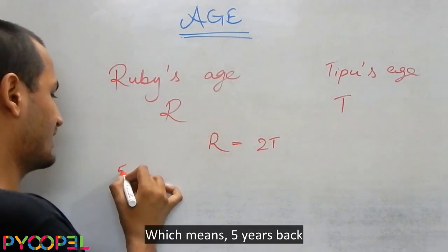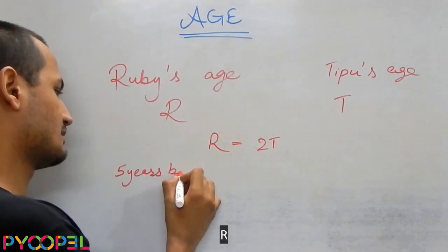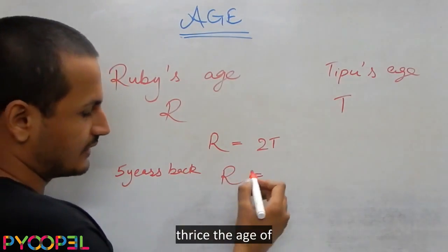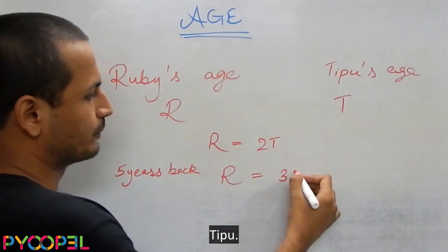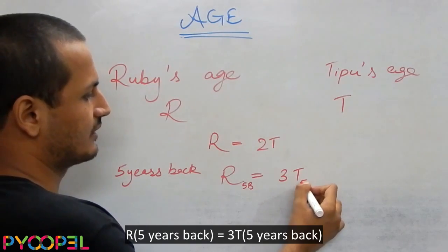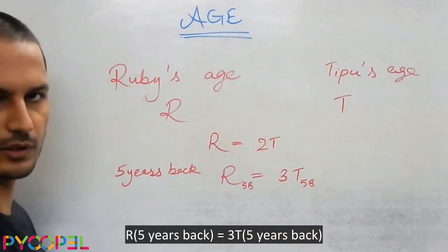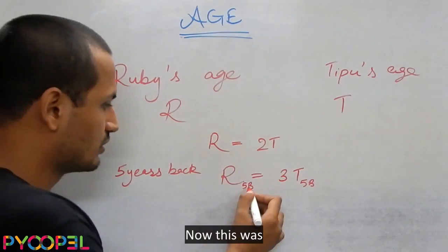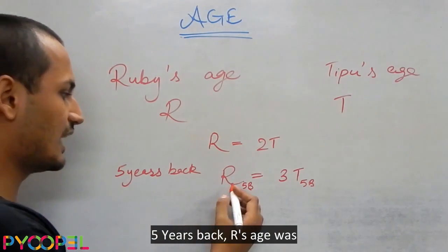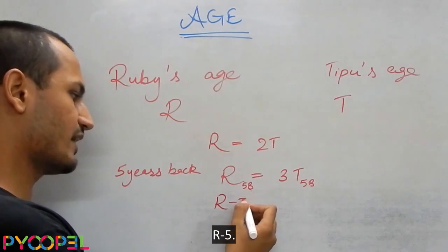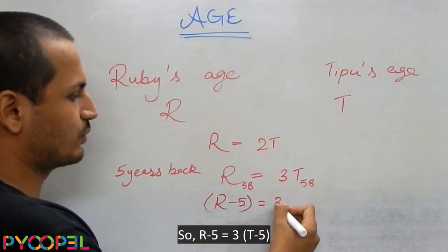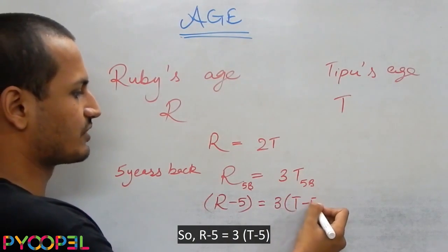Which means five years back R was thrice the age of Tipu. This is R five back, this is T five back. Now this was thrice the age of Tipu, so R five years back, R's age was R minus 5. So R minus 5 is equal to 3 times T minus 5.